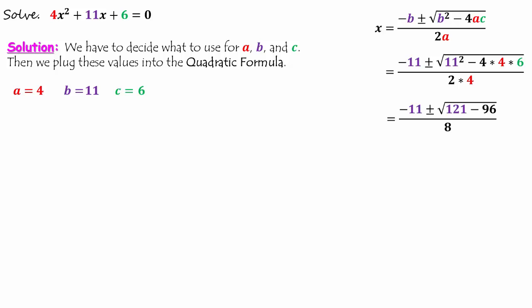4 times 4 times 6 gives us 96. Next, 121 minus 96 gives us 25. Then the square root of 25 is 5.